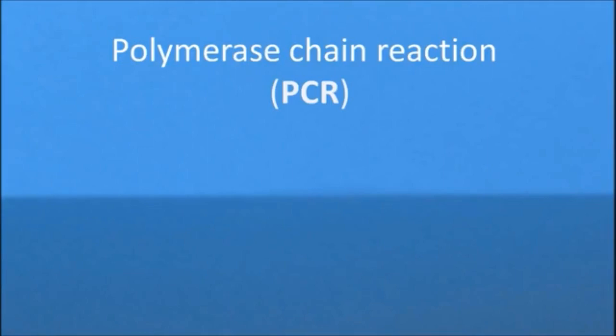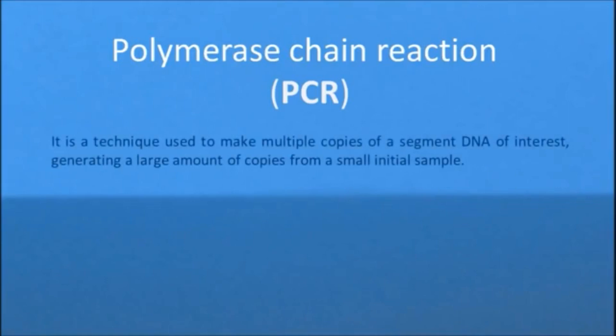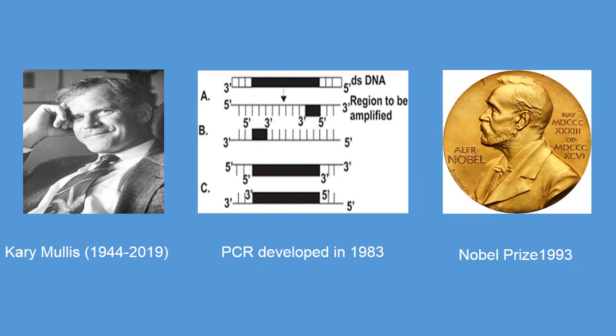Gene amplification can be done artificially by using polymerase chain reaction technique. Thus, PCR is an in vitro technique of gene amplification. It was first developed in 1983 by Kary Mullis. In 1993, Mullis was awarded the Nobel Prize in Chemistry for this work.